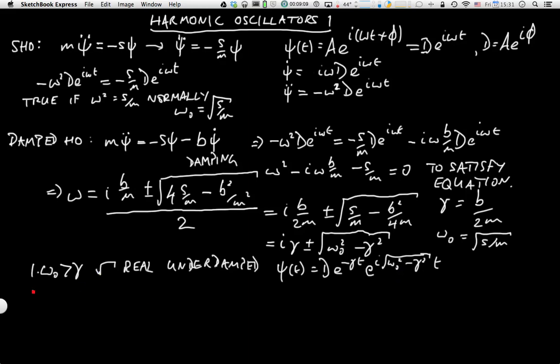The second case is where γ is bigger than ω₀. In this case, the square root is purely imaginary, and we have the overdamped system. Underdamped, overdamped—that's the normal term.